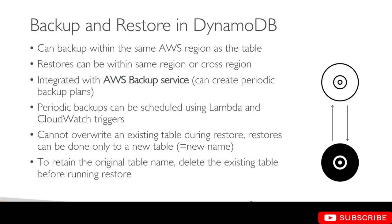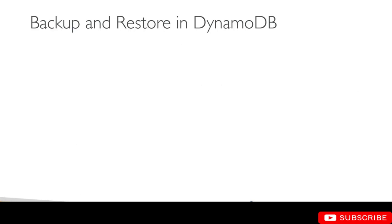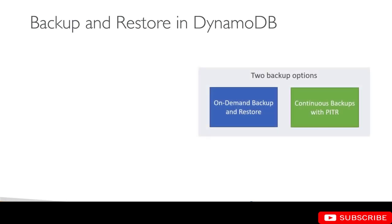You can use IAM policies for access control for your backups. DynamoDB provides two types of backups: on-demand backup and restore, and continuous backup with PITR. On-demand backup and restore means you simply go into the console and create a backup, or use the API or CLI operations to create a backup of your DynamoDB table.